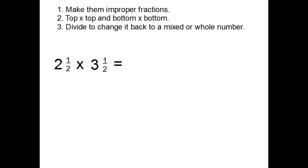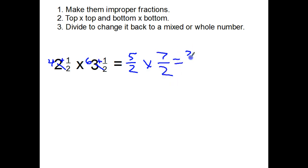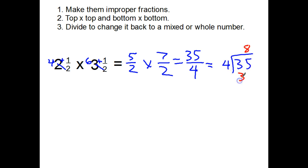Here's a half step up — mixed number times mixed number. Both need to be changed to improper fractions. Two times two is four, four plus one is five, so five halves. Two times three is six, six plus one is seven, so seven halves. Top times top: five times seven is thirty-five. Two times two on the bottom is four. Divide: there are eight fours in thirty-five, eight times four is thirty-two, remainder three. My answer is eight and three-fourths.